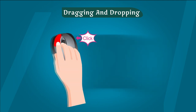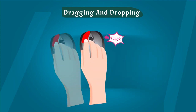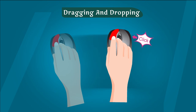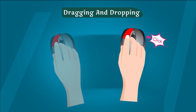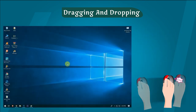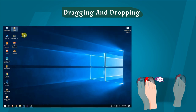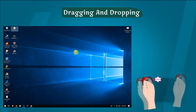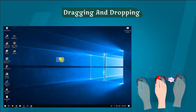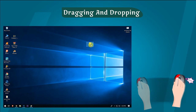Dragging and dropping — Left button को pressed रखकर move करने को dragging कहते हैं। किसी item को एक place से दूसरी place पर move करने के लिए dragging का use करते हैं। Dragging के बाद mouse button को release करने को dropping कहते हैं। इस पूरी process को drag and drop कहते हैं।